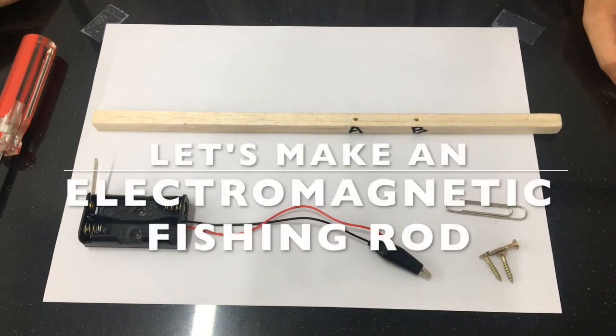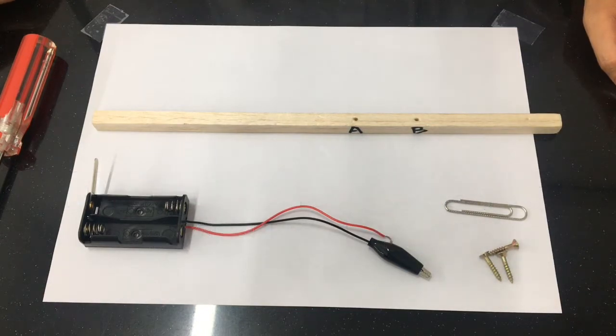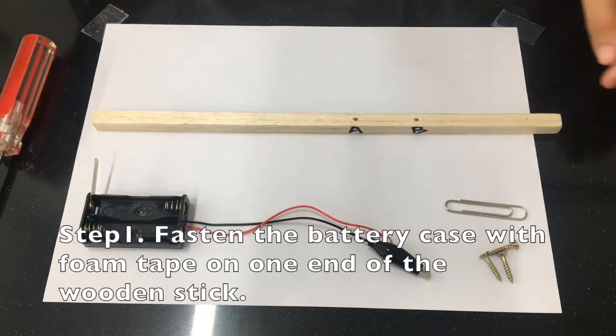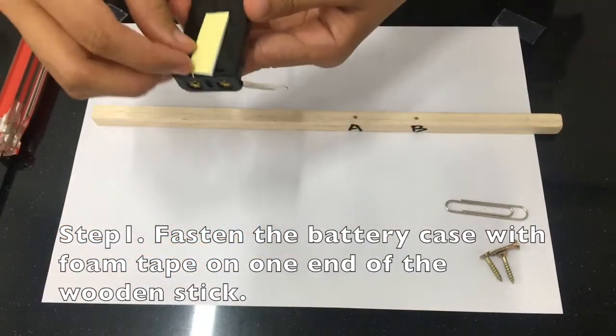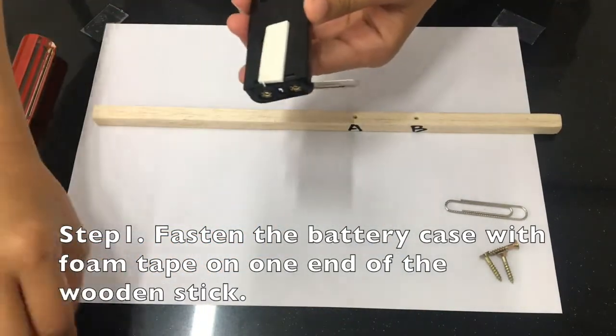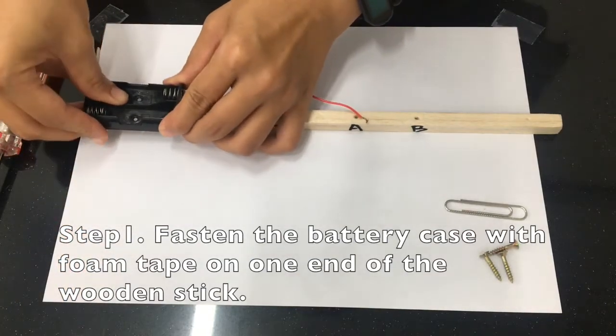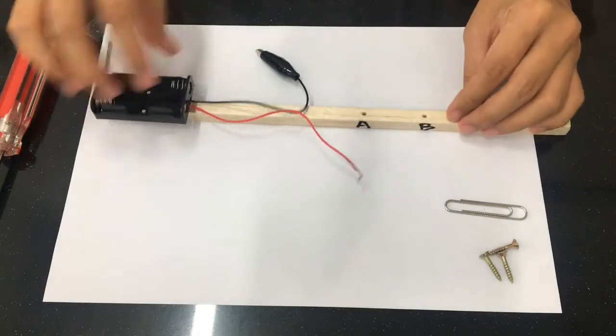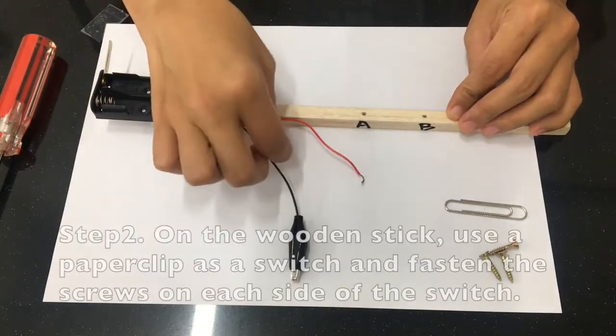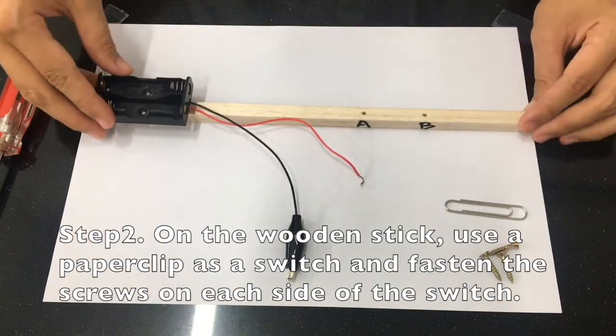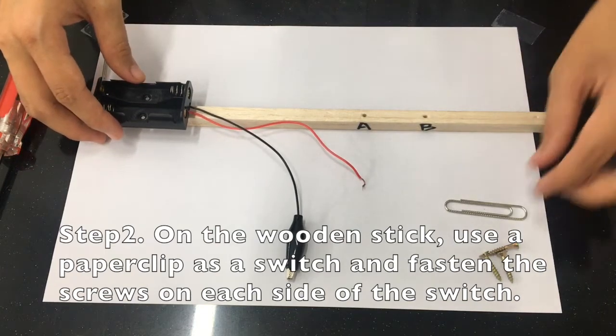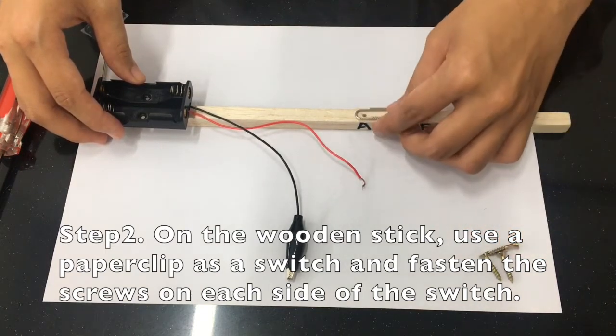Let's make an electromagnetic fishing rod. Step 1: Fasten the battery case with foam tape on one end of the wooden stick. Step 2: On the wooden stick, use a paper clip as a switch and fasten the screws on each side of the switch.